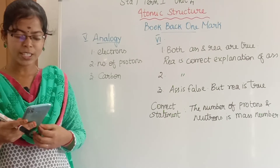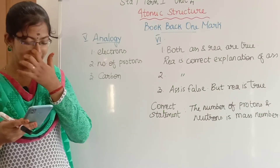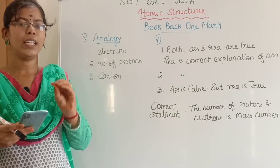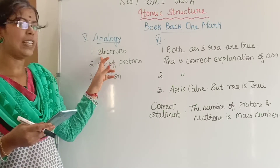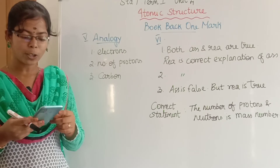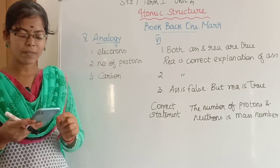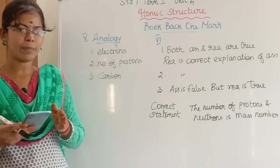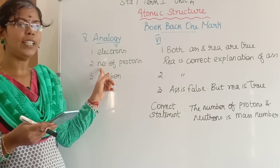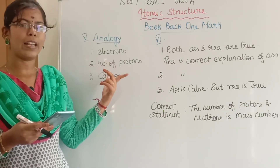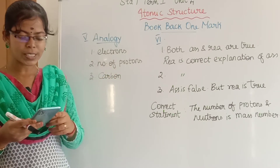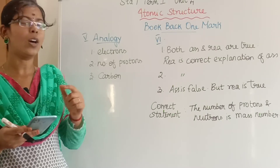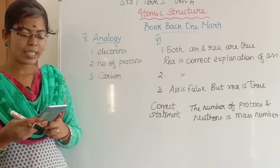Fifth section: complete the analogy. First: sun is to nucleus as planets are to electrons. Second: atomic number is to mass number as number of protons is to total number of protons and neutrons. Mass number is the sum of protons and neutrons; atomic number is the number of protons, which equals the number of electrons. Third: K is to potassium as C is to carbon.